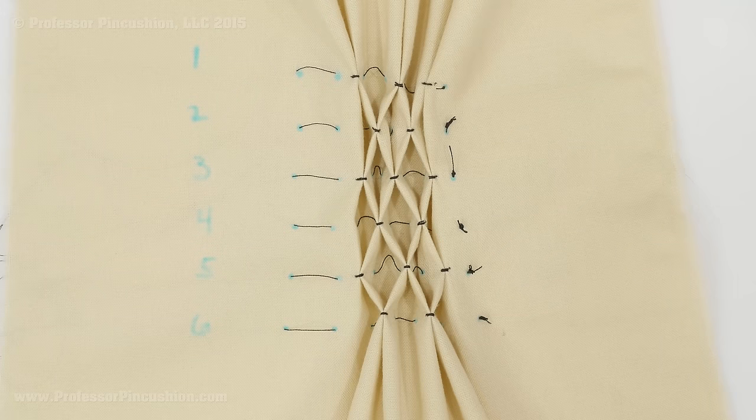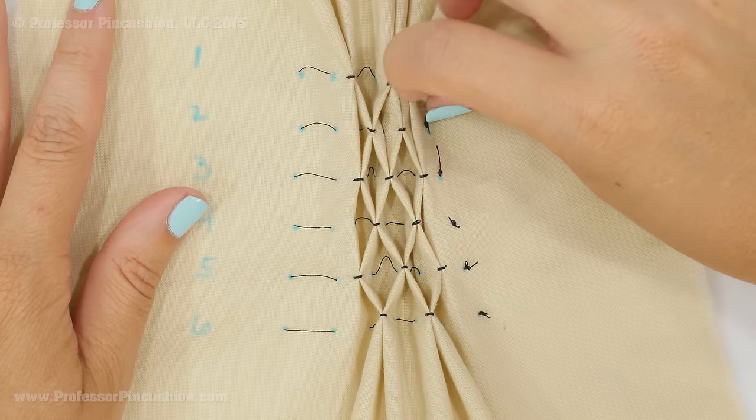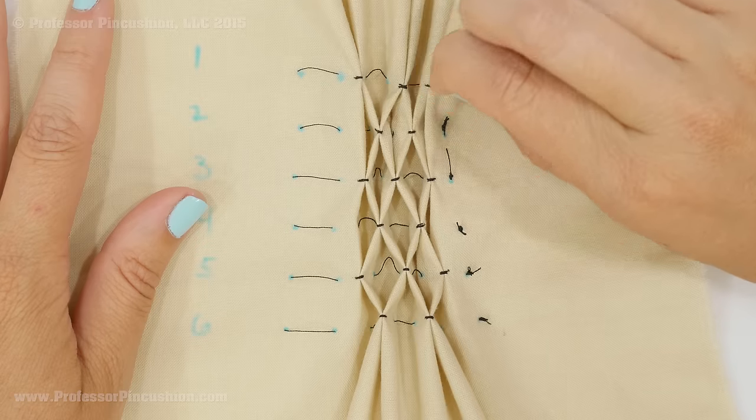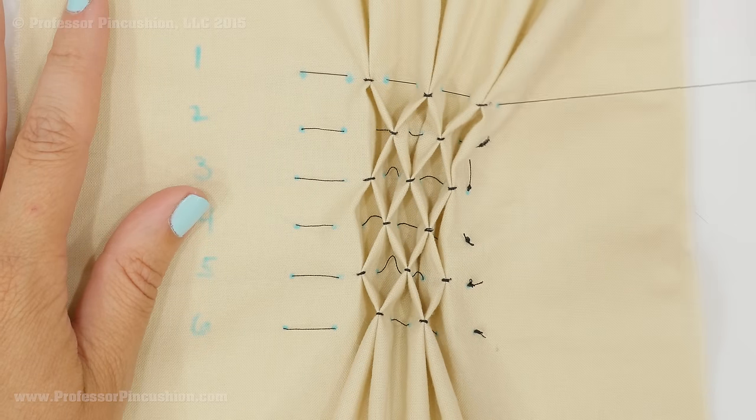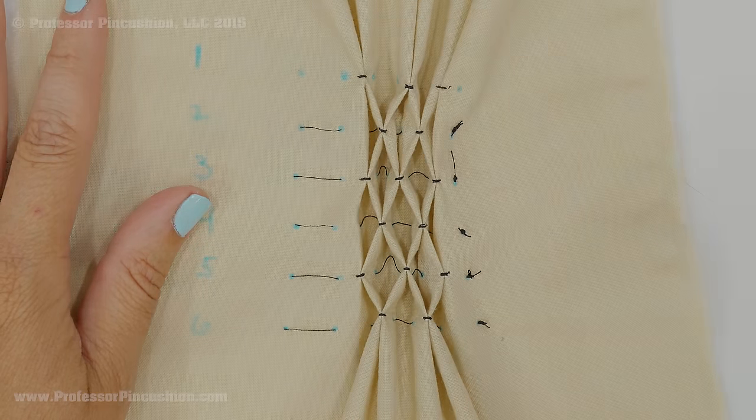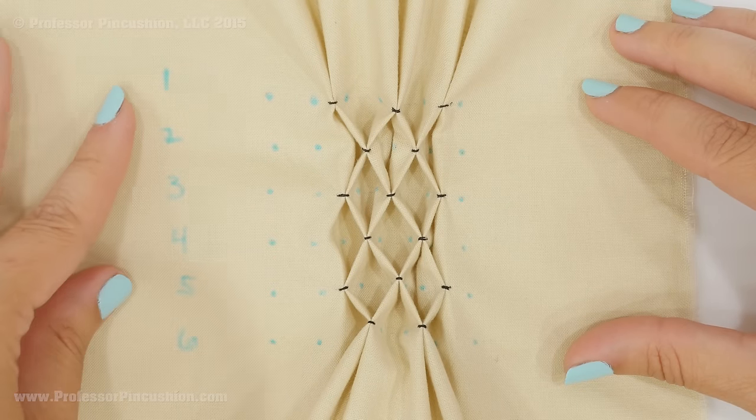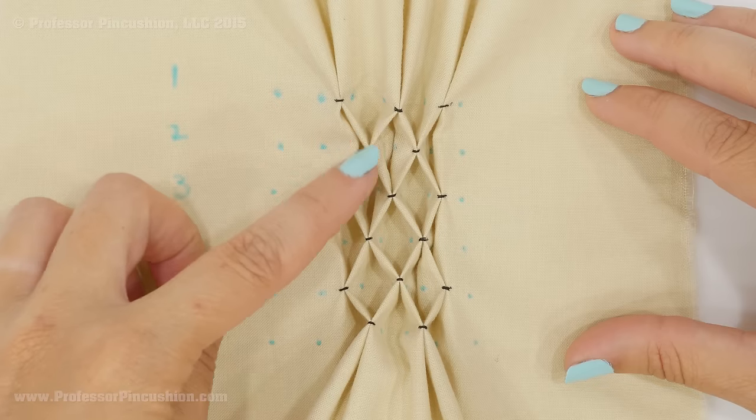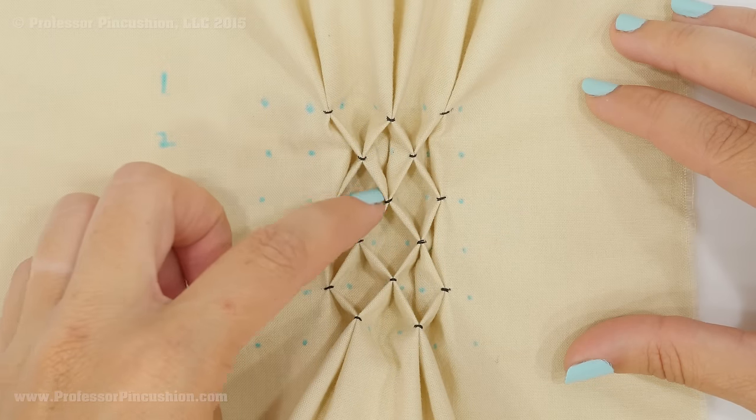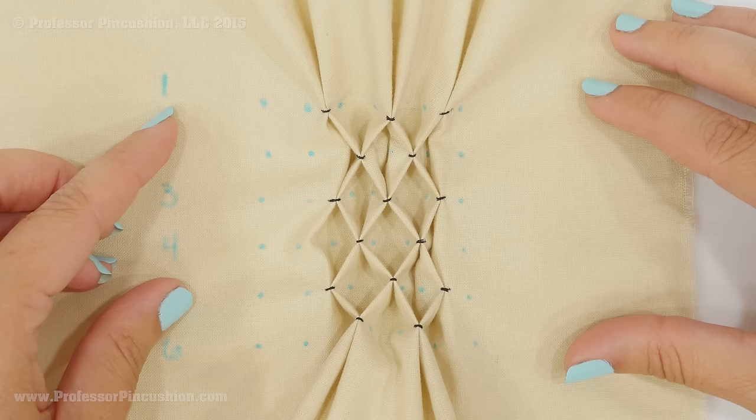When you finish with all your rows, you can go ahead and remove your basting stitches and any fabric markers that you have. Without the basting stitches, it's a little bit easier to see my permanent stitches here. And you can see the pleats kind of form what look like X's, but if you look at the inverted portion, it looks like diamonds.